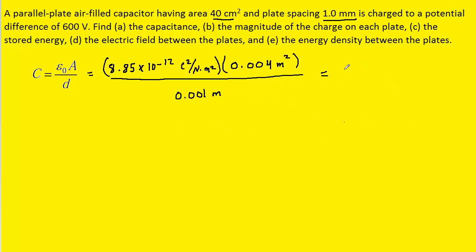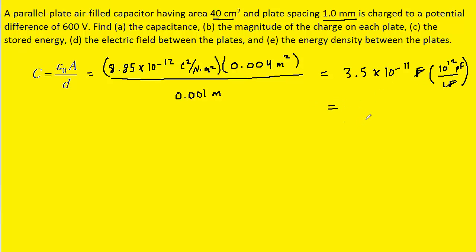When we compute this, we get a capacitance equal to approximately 3.5 times 10 to the minus 11th. The standard unit of capacitance is farads. If you need to convert that into picofarads, you can note that one farad contains 10 to the positive 12 picofarads. The farads cancel, and when you type that into your calculator, you get 35 picofarads. So that would be an equivalent answer to part A.